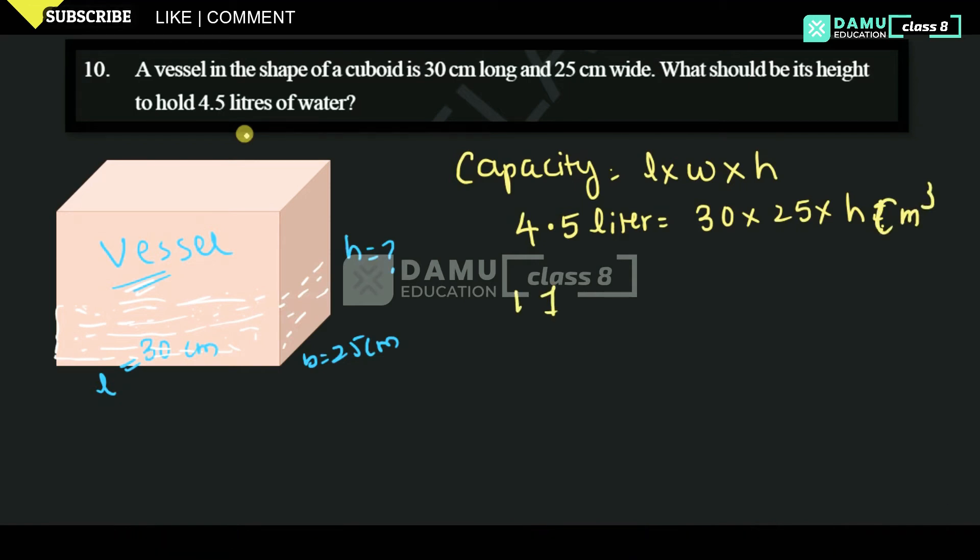1 liter equals 1000 cm cubed. So that is the constant value.